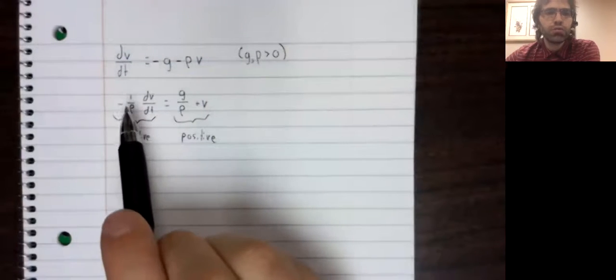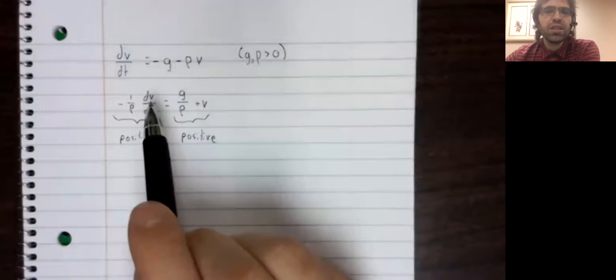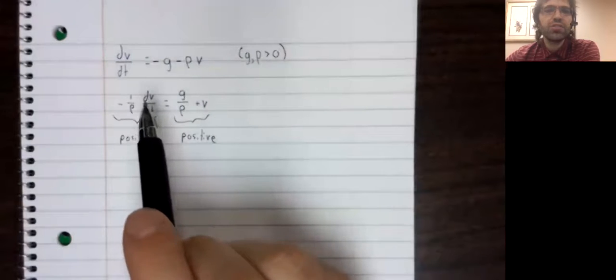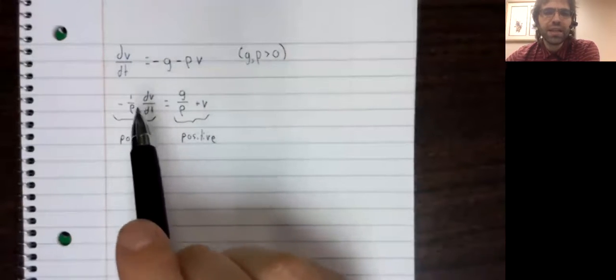Negative one over rho is clearly negative. dv/dt is acceleration, and acceleration is also always negative.